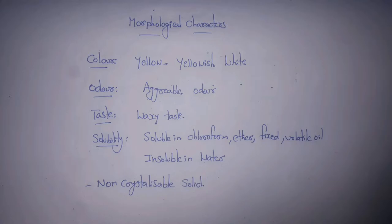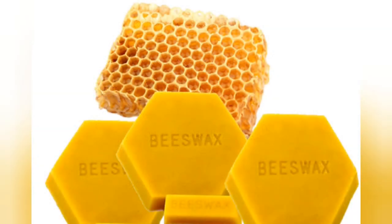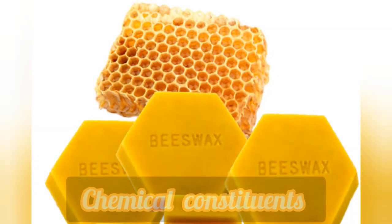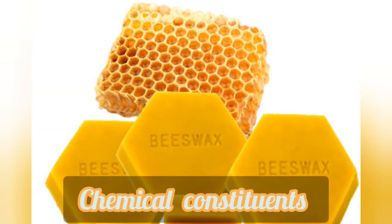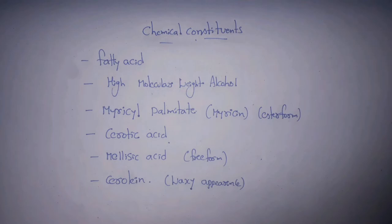It is a non-crystallizable solid. Chemical constituents: it mainly contains fatty acids, high molecular weight alcohols, myricyl palmitate — also called myricin — cerotic acid, melissic acid, and cerosin.